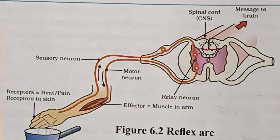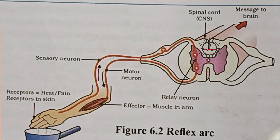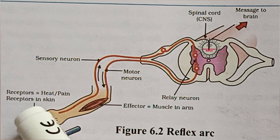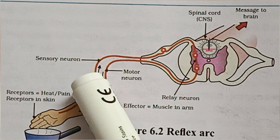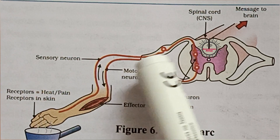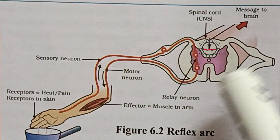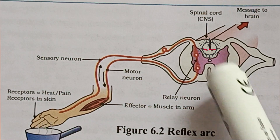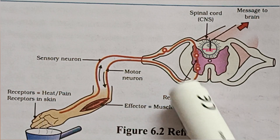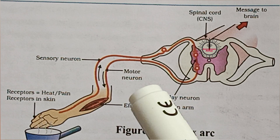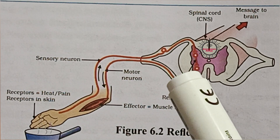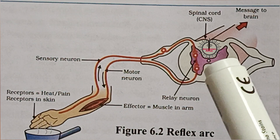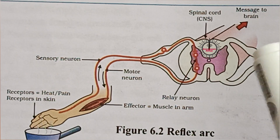Another example: when bright light focuses on your eyes, the receptor in the eye receives the information. The sensory neuron carries it to the spinal cord. The relay neuron analyzes it and gives a response. The motor neuron carries the response to the eyelids, which close — that is the reflex action.